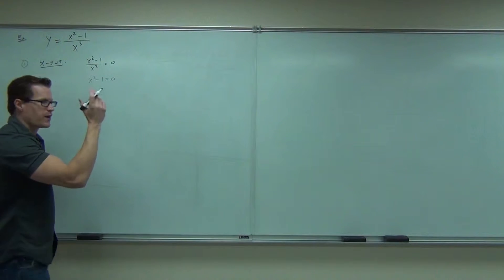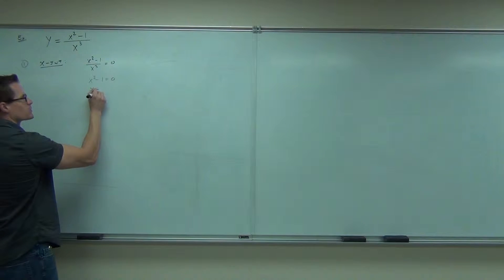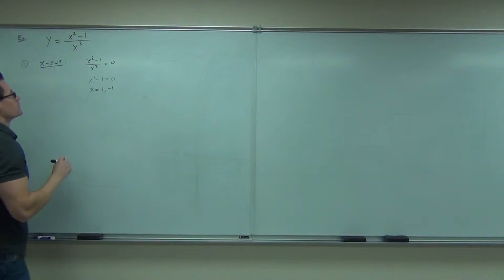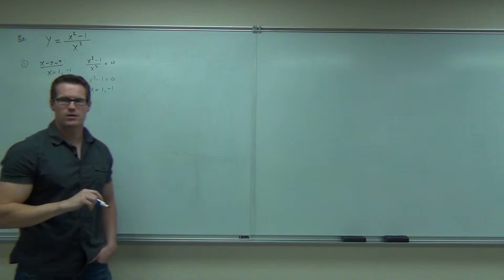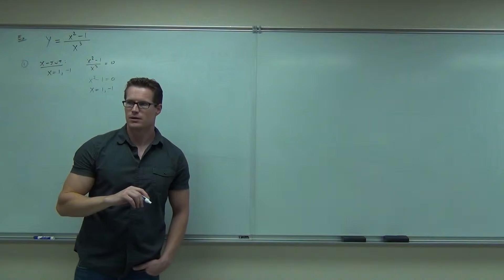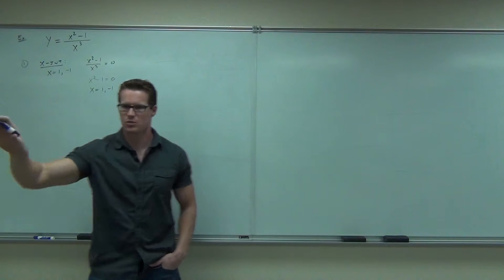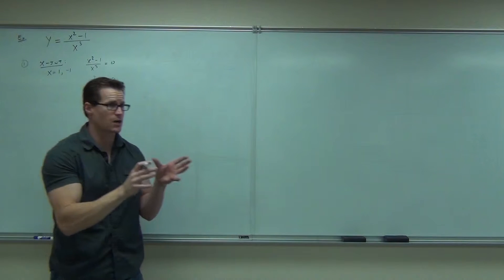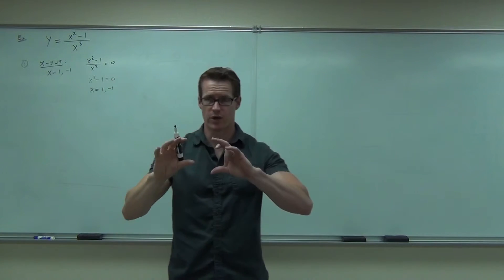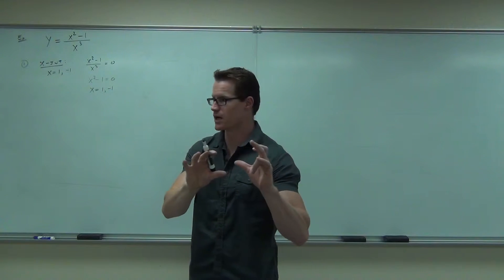You add 1, take a square root. Or factor, either way you're going to get x equals 1, negative 1. Are you okay with that so far? You sure? So if the numerator equals 0, no problem. That's how you find your x-intercepts for any rational function. Numerator equals 0. You got it?